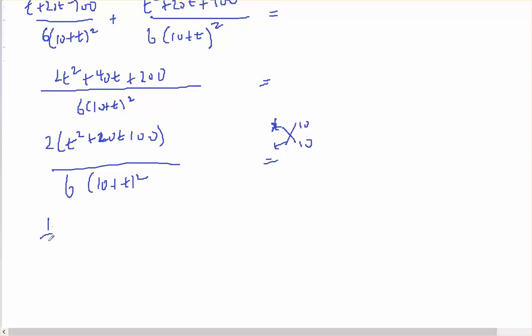That's going to equal 1 over 3. The (t plus 10) squared terms cancel, equals one-third, which equals the right hand side, which is what I've shown.